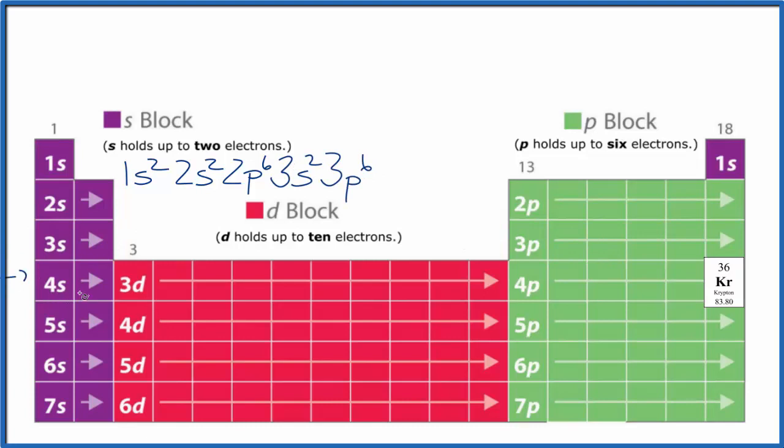We're at the fourth energy level, we have 4s1, 4s2. We go to 3d, which holds up to 10, and we end up with 4p1, 2, 3, 4, 5, 6, and there's Krypton. So this is our electron configuration.